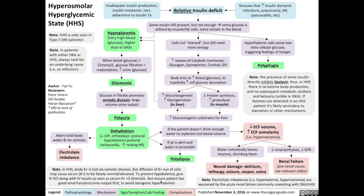We need to make sure the patient has good renal function and good urine output first, to avoid iatrogenic hyperkalemia. If the patient is alert and water is accessible, the patient will try to correct the dehydration by themselves by drinking more water, known as polydipsia.